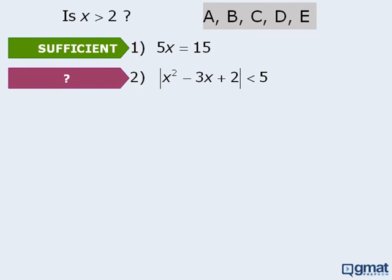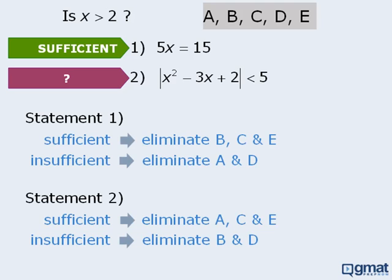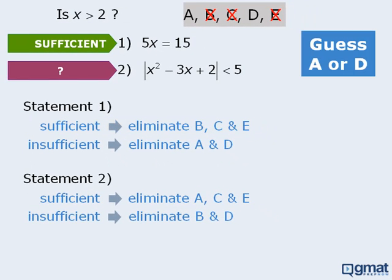Using the elimination method, we can see that when statement 1 is sufficient, we can eliminate answer choices B, C, and E. When we do this, we see that only two answer choices remain, so we will guess either A or D. By knowing that statement 1 is sufficient, we were able to reduce our possible answer choices down to just 2.